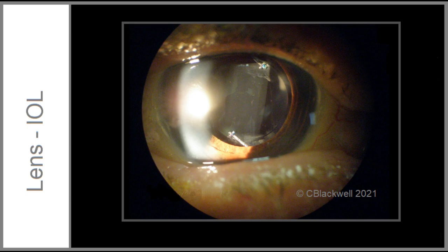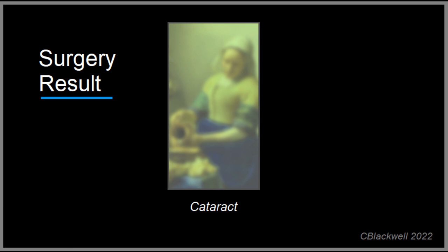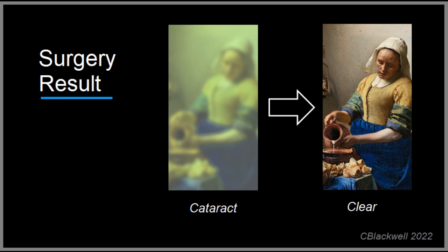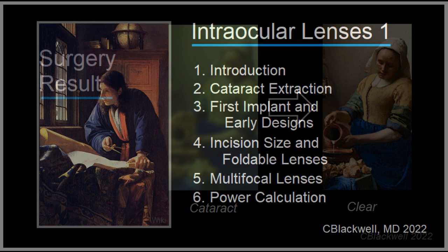Now the lens implant is nicely in place. This is looking in through a dilated pupil after cataract surgery. The arrowheads point to the edge of an intraocular lens centered in the capsule. The result — if the eye is otherwise healthy, for example no macular degeneration — vision improves from cloudy to clear.